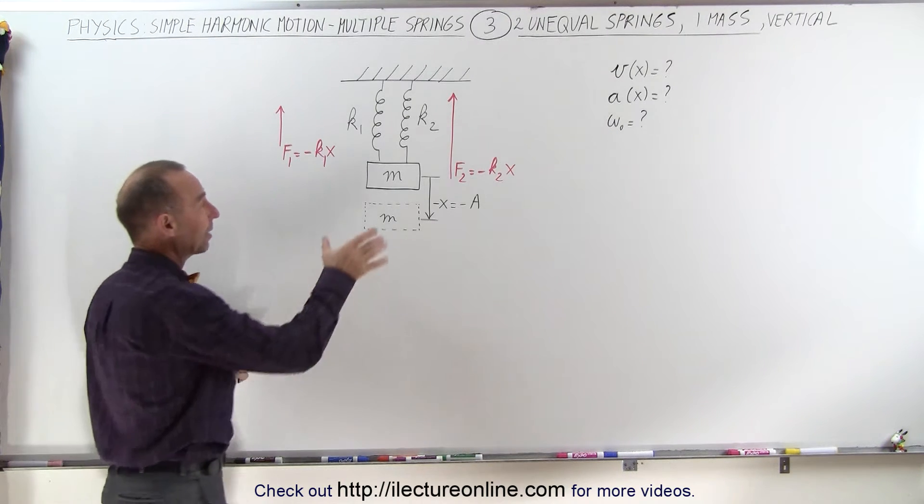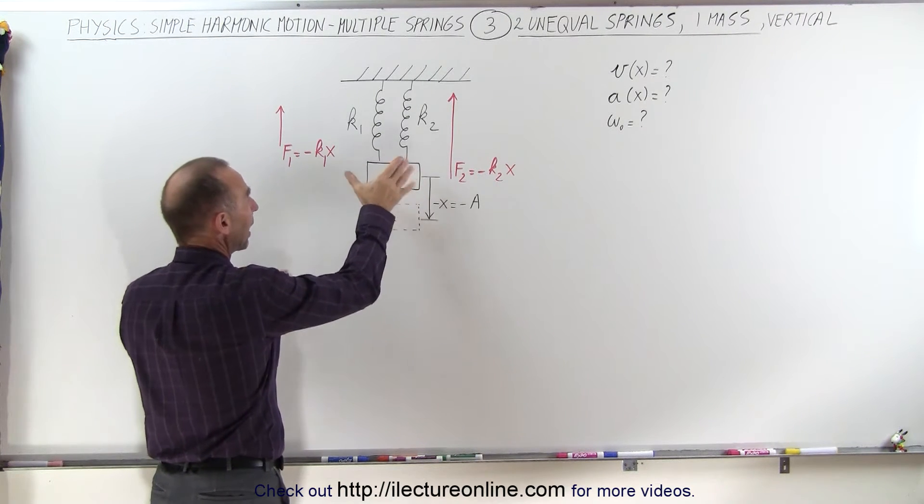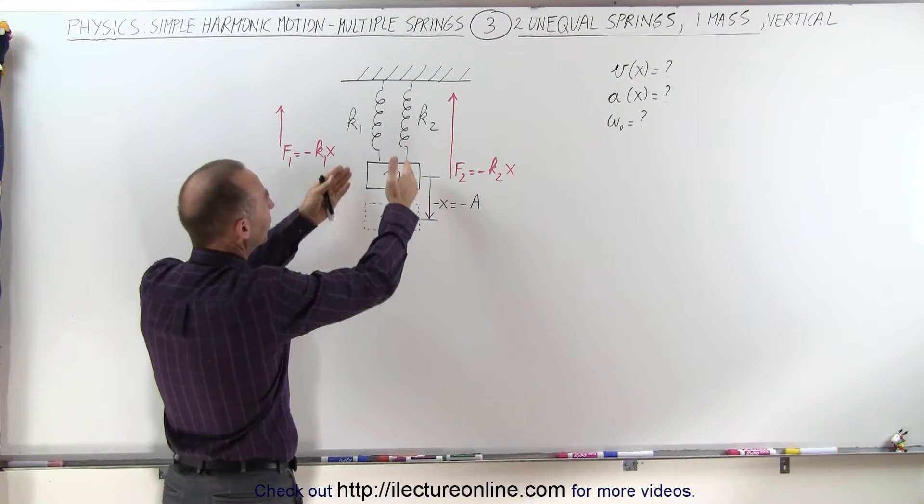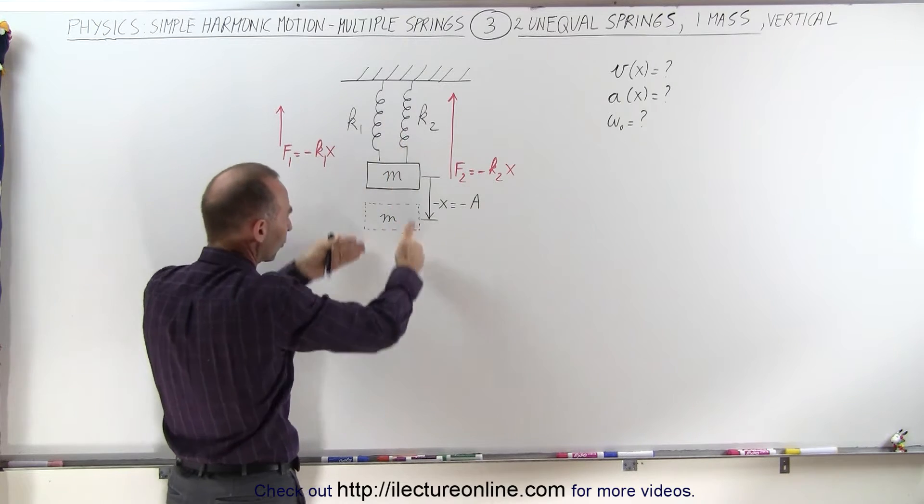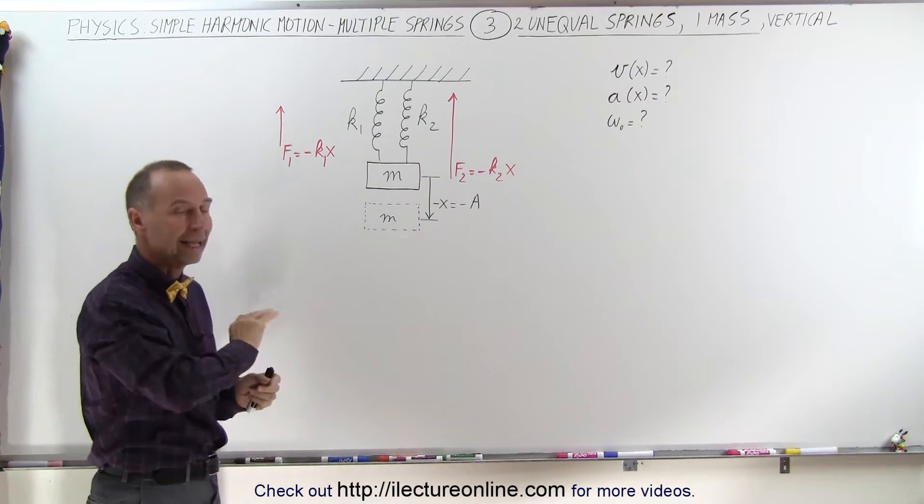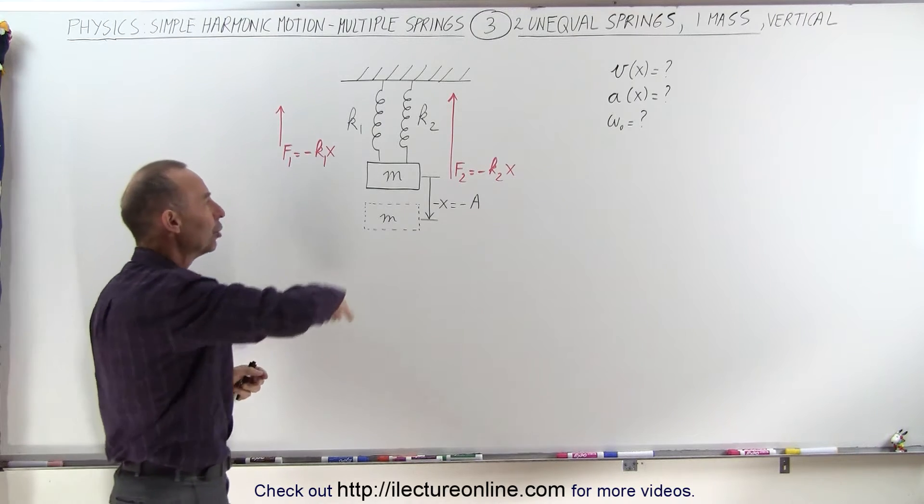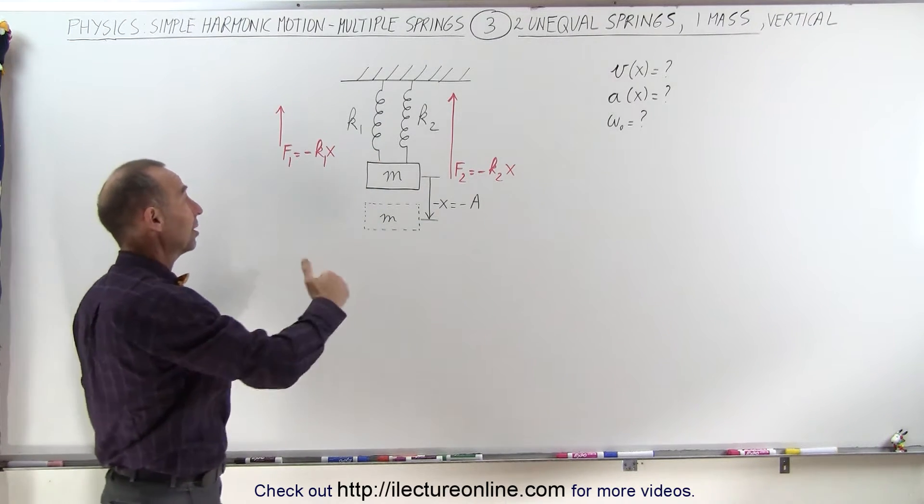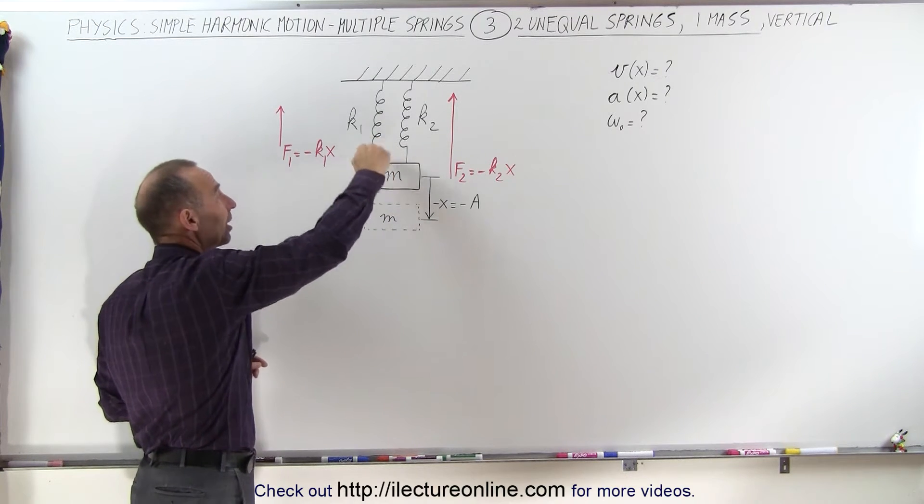What we first do is we attach the mass to the springs. We allow everything to settle down so that the mass will drop down until the force upward is equal to the force of gravity downward, which in essence negates the force of gravity, and so there's no potential energy due to the change in height. However, there is change in potential energy due to the change in length of the springs.